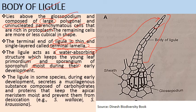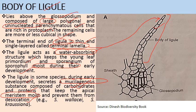The ligule is thought to be a water-storing or water-absorbing structure. In some species, during early development it secretes mucilaginous substances composed of carbohydrates and proteins that keep the apical meristem moist and prevent desiccation — for example in Selaginella wallacei and Selaginella krausiana. This was all about the internal structures of Selaginella.